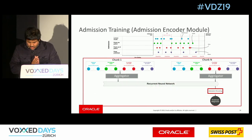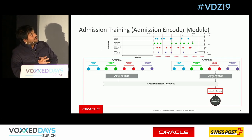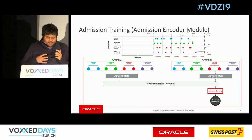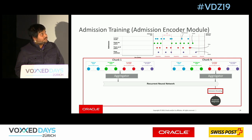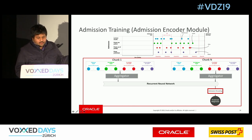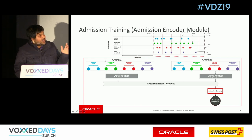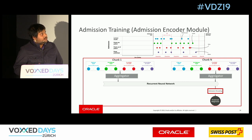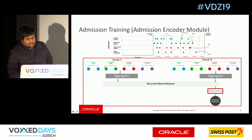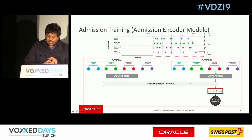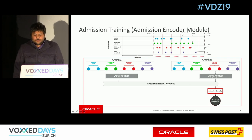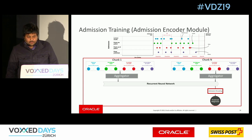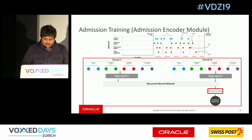The admission encoder module gives us an encoding — a vector representation — of the admission. We have four types of events: lab test results, fluids into the patient, output fluids, and prescriptions. We partition into two-hour chunks, and for each chunk consisting of these four events we use aggregators like max aggregator or mean aggregator, then feed it to the recurrent neural network. The key output is the admission encoding — a vector representation of the given admission.